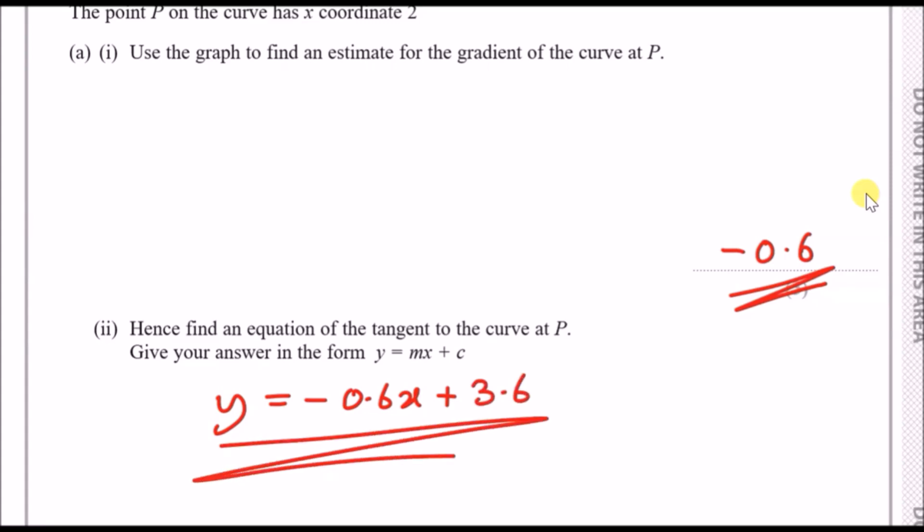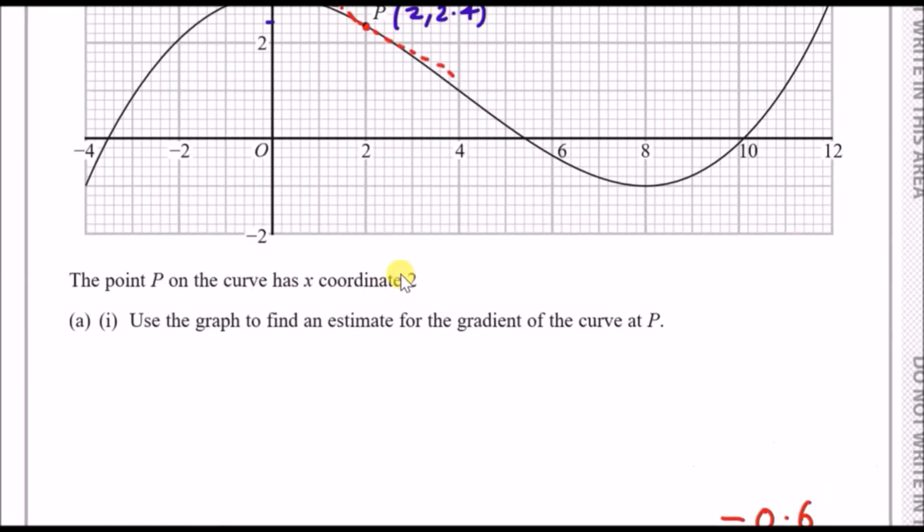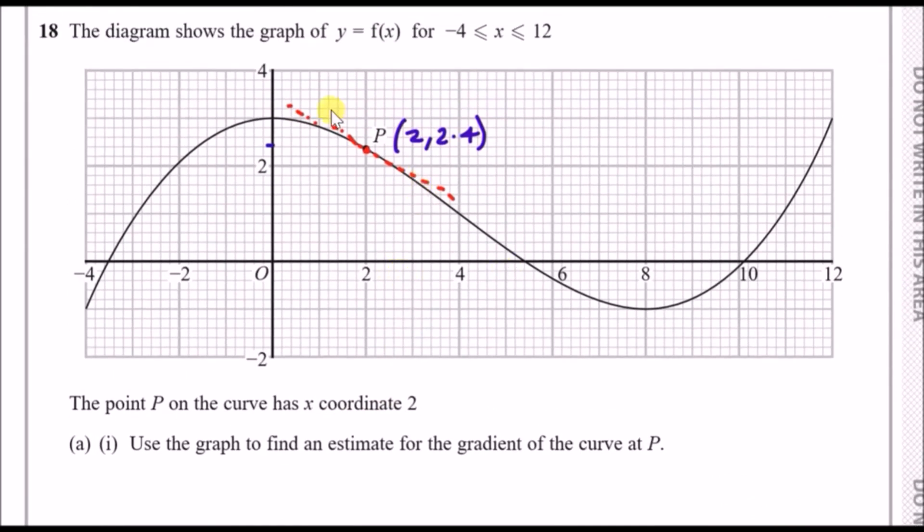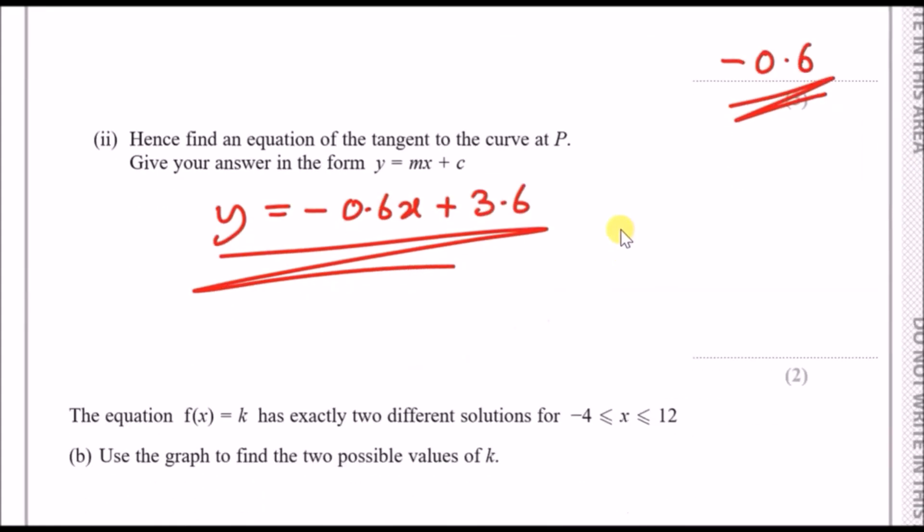Now, in the mark scheme, which I haven't got yet guys, it could be a bit different. Maybe they've got 0.5 or 0.7. This is just an estimate. Usually with estimates, it could be a range of answers because it depends how you draw your line. But it shouldn't be too far off these values.